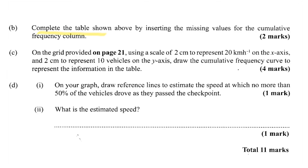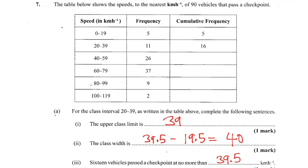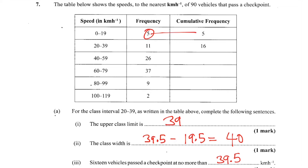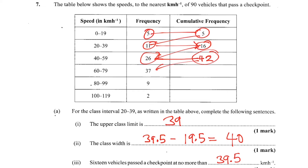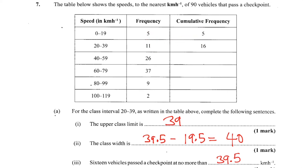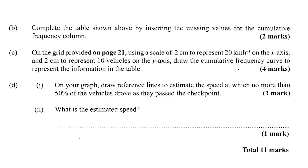Part B: complete the table shown above by inserting the missing values for the cumulative frequency column. If you've never seen cumulative frequency before, this is how it works: 5 goes there, then 5 plus 11 goes here. Then 16 plus 26 which is 42 goes here. You see the pattern? And 42 plus the next number brings us up to 90. So the missing values are 42 and 90, and the table is complete. We just collected two marks for that section.